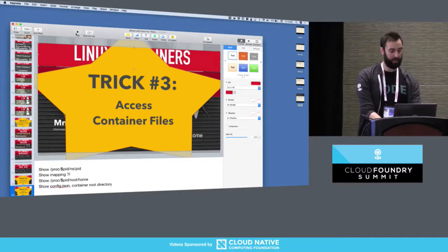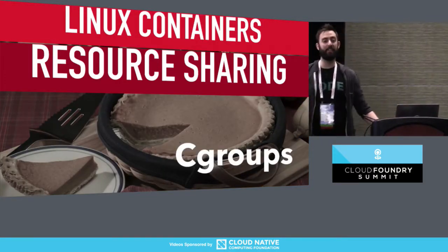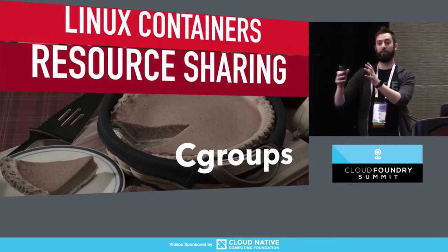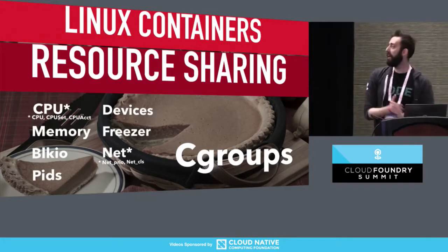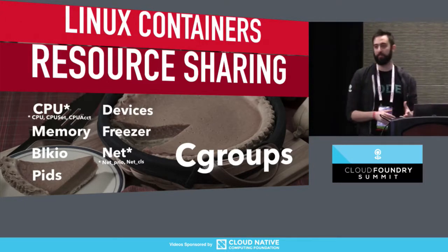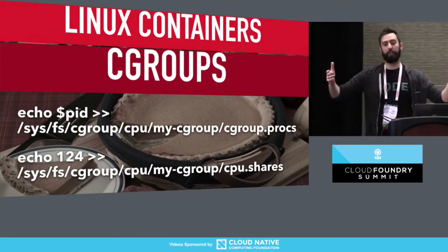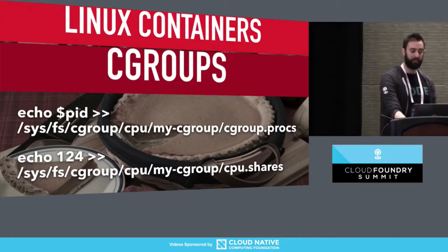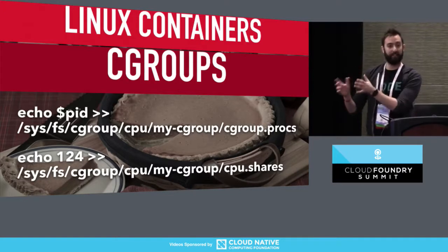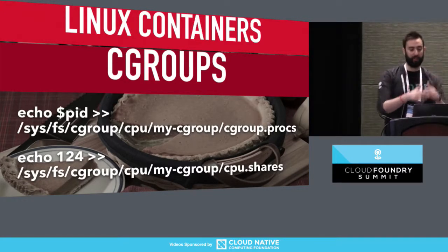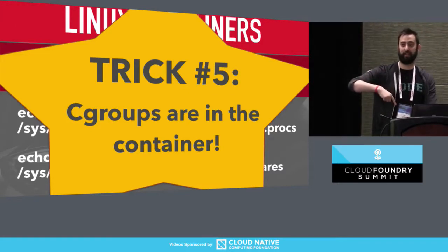That's namespaces. Resource sharing is done by cgroups. The same way that namespaces give you isolation, cgroups give you sharing between different applications — they're not going to hide stuff, they're going to share it. There's a ton of different cgroups: CPU cgroups, devices cgroups, memory cgroups that all deal with different resources. They look like a directory structure that you can mount, with files in there that you can read to see current values, or write to in order to change the values.